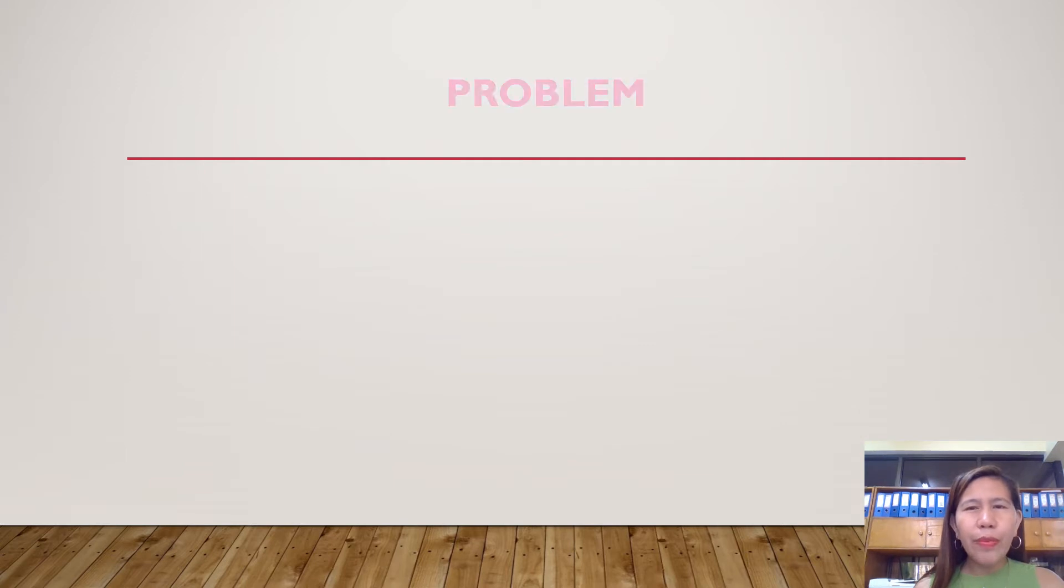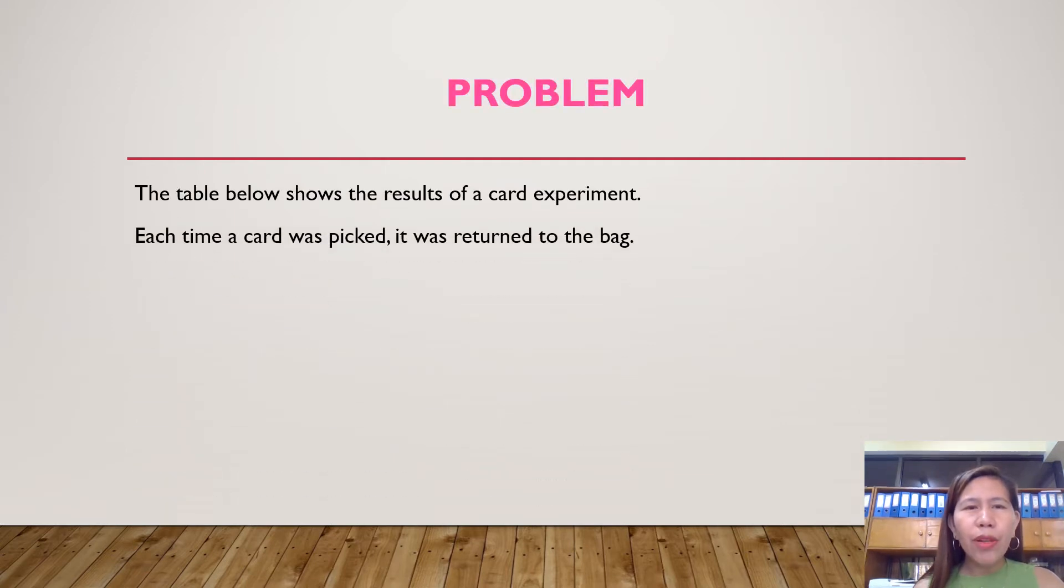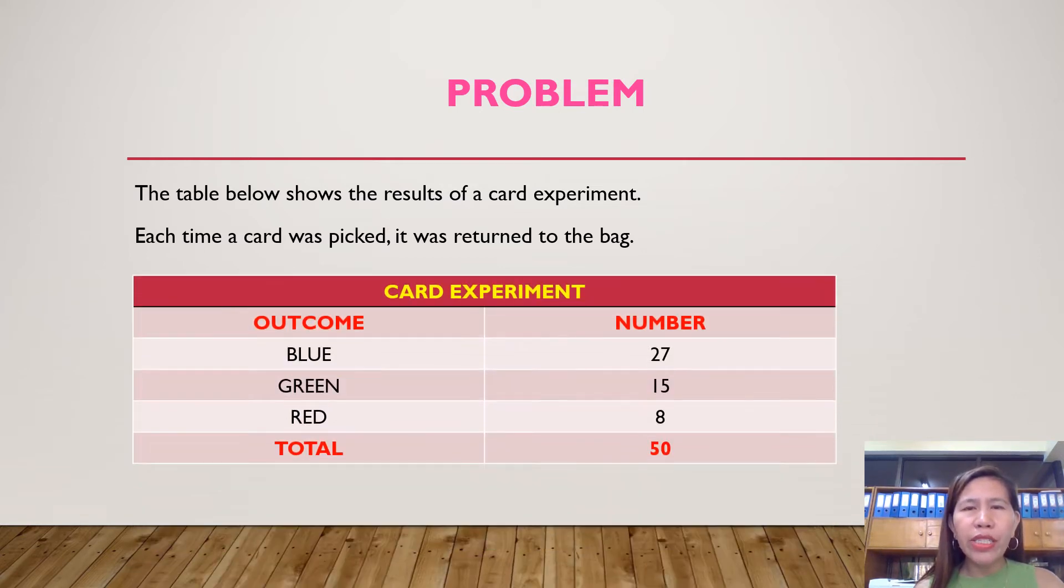This is our problem. The table below shows the result of a card experiment. Each time a card was picked, it was returned to the bag. Card experiment, we have outcome and number. For outcome, we have blue, 27 trials, green, 15 trials, red, 8 trials, with a total of 50 trials. And we are going to answer the questions that follow.